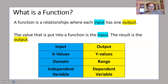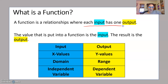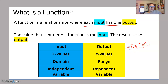So first, what is a function? A function is a relationship where each input has one output. The value that is put into a function is the input, and the result is the output. Think of it like a machine — you put in the input, what comes out is the output, and the machine is your function.